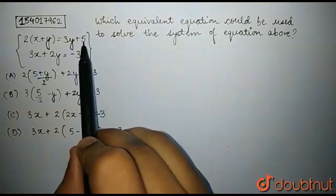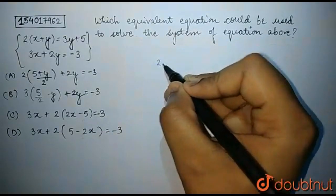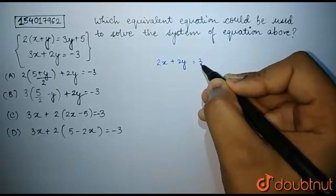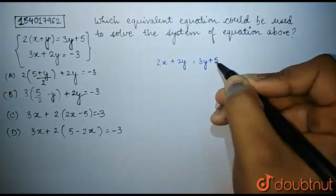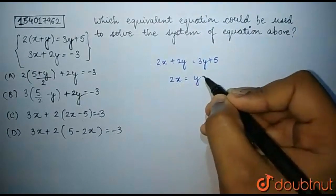We will try to write this equation in the standard form. So, we can write the first equation as 2x plus 2y is equal to 3y plus 5. Therefore, 2x is equal to y plus 5.